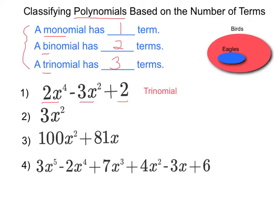The next one just has one term. So that one would be classified as a monomial. The next one has two terms. So that one would be called a binomial.